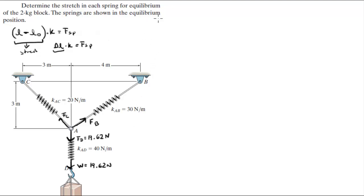You know that the sum of the forces in the Y is equal to 0, so F_sB minus W is equal to 0. That's how we know that F_sB is equal to W.